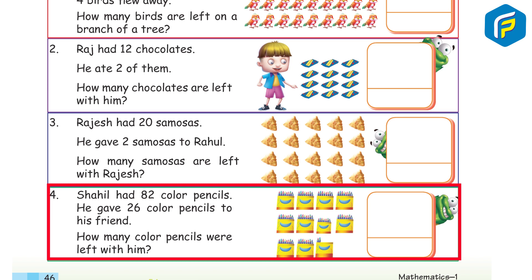Sahil had 82 color pencils. He gave 26 color pencils to his friends. How many color pencils were left with him?